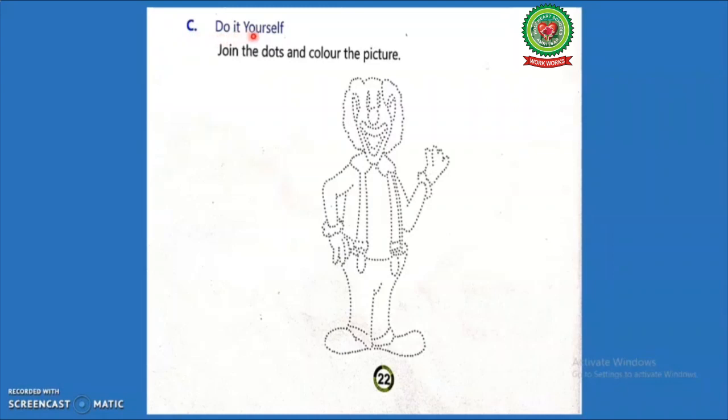Exercise C: Do it yourself. Join the dots and color the picture. Now students, you will join the dot and color this picture on the book.